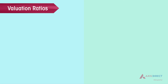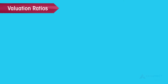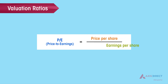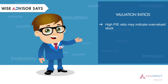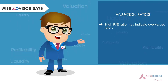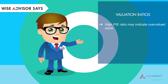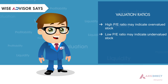Valuation Ratios give a comparison between the current stock price and the company's ability to make profit. One of the important valuation ratios is the Price-Earnings or P/E ratio, which tells us how much an investor is willing to pay for a company's earning power. A high P/E ratio may indicate the company is overvalued and its price may come down due to market forces, while a low P/E ratio may indicate undervalued stocks with good growth potential.